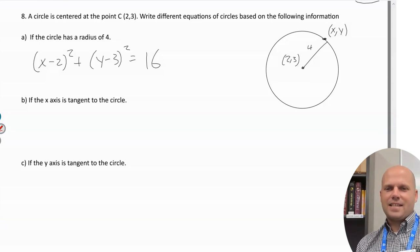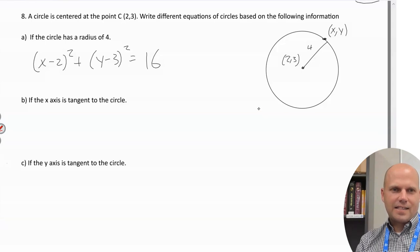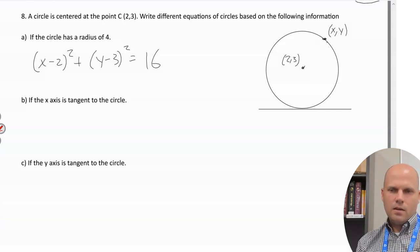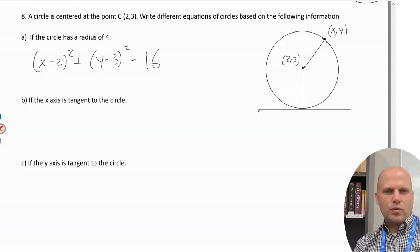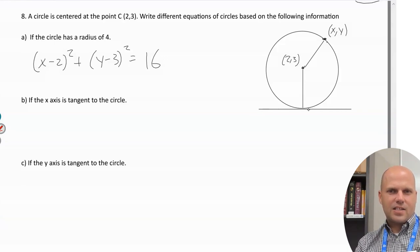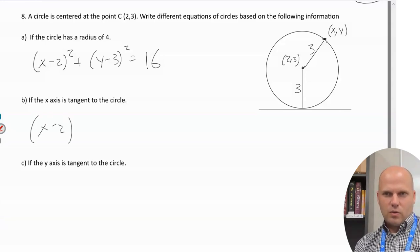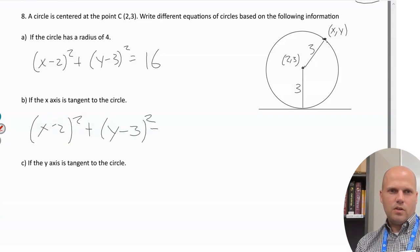If the x-axis is tangent to the circle centered at (2,3): I need to figure out what the radius length would be. The center is at (2,3) — that's over 2, up 3. If the x-axis is tangent to the circle, then the distance from the center straight down to the x-axis is 3. So the radius becomes 3, and the equation is (x-2)² + (y-3)² = 9.